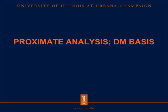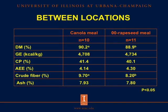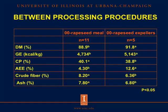Now let's talk about the results, starting with proximate analysis. For gross composition of canola meal and 00 rapeseed meal from different locations, the concentration of gross energy, crude protein, fat by acid-hydrolyzed ether extract, and ash were not different. However, the concentration of dry matter and crude fiber in canola meal from North America were greater than in 00 rapeseed meal from Europe. Between 00 rapeseed products from different oil extraction procedures, dry matter, gross energy, and fat in 00 rapeseed expellers were greater than in 00 rapeseed meal from solvent extraction. The concentration of crude protein, crude fiber, and ash in 00 rapeseed meal were greater than in 00 rapeseed expellers.